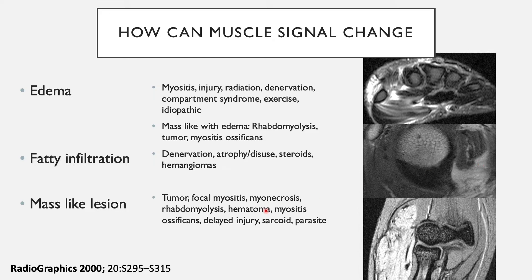The third kind of abnormality is a mass-like lesion, which includes tumor, focal myositis, myonecrosis, rhabdomyolysis, hematoma, and so on.